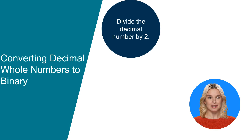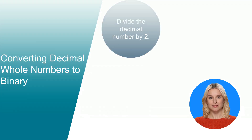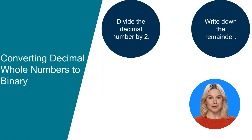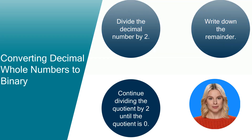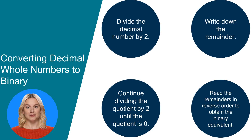Now let's learn how to convert whole decimal numbers to binary numbers. The process involves dividing by 2 and noting the remainders. Step 1: Divide the decimal number by 2. Step 2: Write down the remainder — the remainder is 1 if the number is odd and 0 if the number is even. Step 3: Continue dividing the quotient by 2 until the quotient is 0, then read the remainders in reverse order to obtain the binary equivalent.